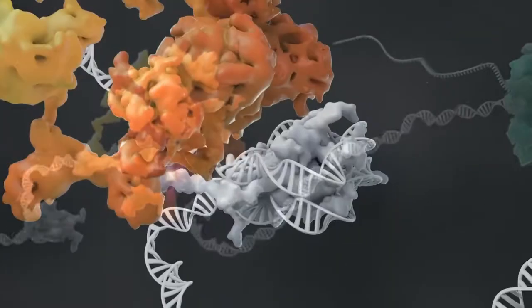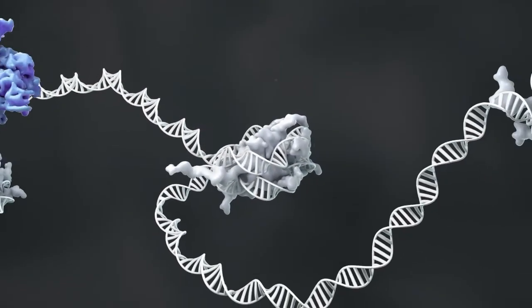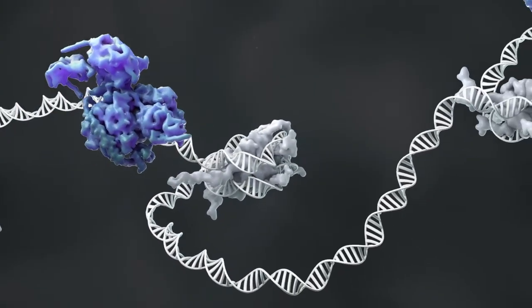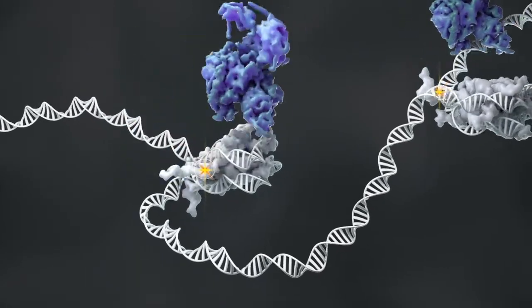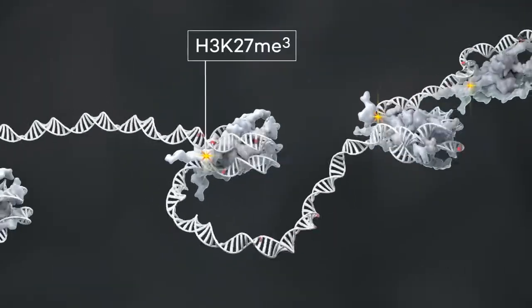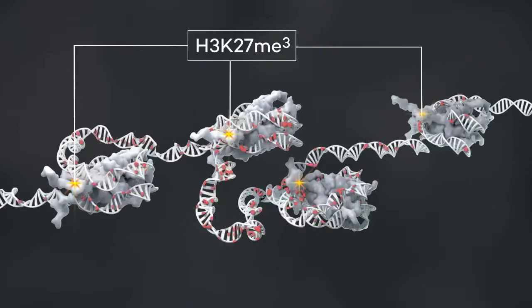However, when MLL2 is lost, PRC2 arrives and administers its histone H3-lysine-27 trimethyl mark, leading to suppression of gene expression.